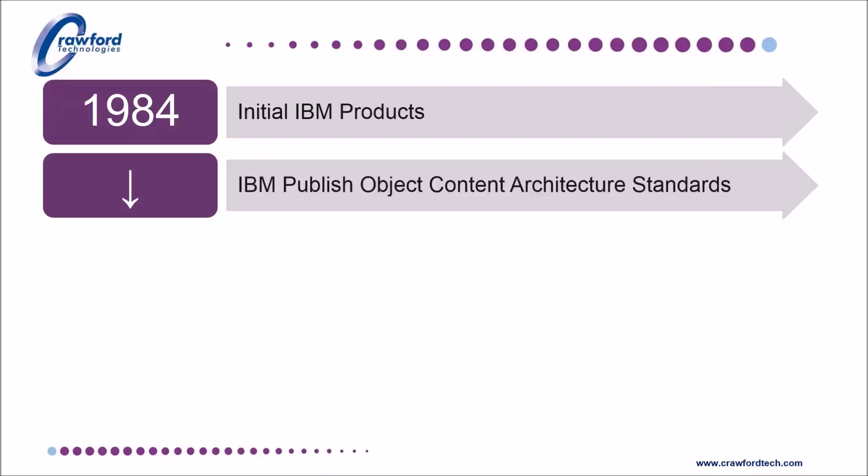For the next 20 years IBM evolved AFP, adding support for multiple printer resolutions, cut sheet and continuous printers from IBM and other manufacturers. Support for Adobe Type 1, TrueType and OpenType fonts was added. The architecture also became available on the newer off-mainframe platforms such as AS400, Windows and AIX.